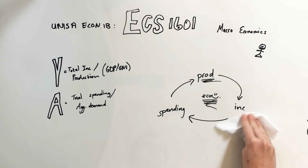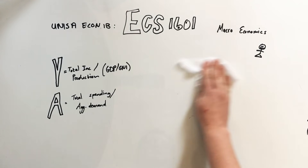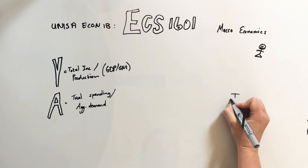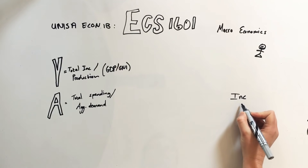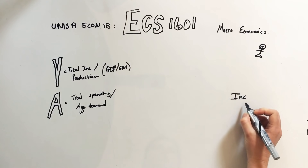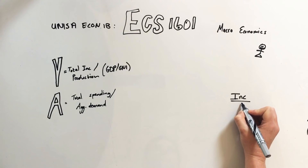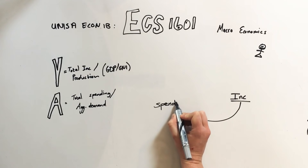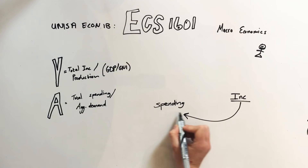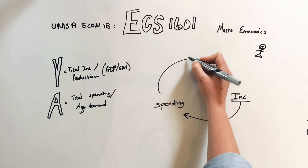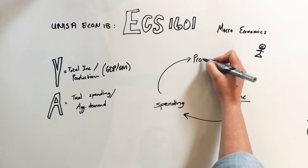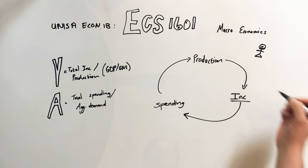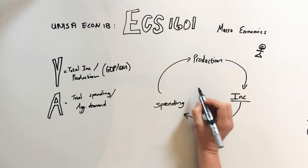So they earn an income, and the income gets spent again. It's almost so easy that it's complicated. Let me draw this again: we have income — your salary, pocket money, whatever money you get. Once you have that money you're going to go spend it, so there is spending. But whatever you're spending it on should have been produced at some point, so there's production, which leads back to income — and that, ladies and gentlemen, is our economy.